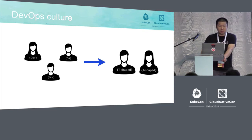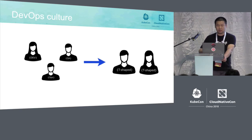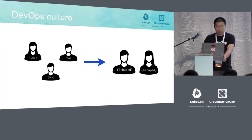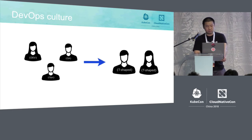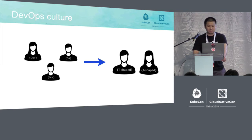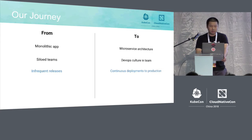In terms of DevOps culture, the industry has coined terms like DevOps engineer and full-stack engineer. At Meetup, we used to have developers, QA, and operational engineers. Now we've transformed each of these responsibilities into a single role — it's called T-shaped engineering. Some companies call it generalist engineering. As I said, we now do continuous deployments into production.